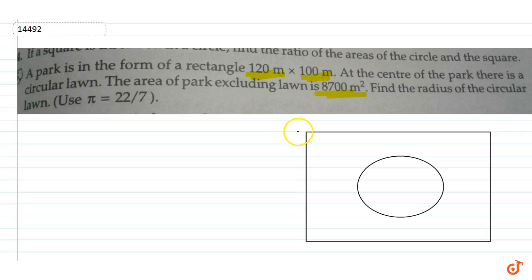So we have a rectangular park which is 120 meter by 100 meter. If I write area of park, the formula is length into breadth. The length value given is 120 and breadth is 100, so 120 into 100 equals 12,000 meter square. So the area of park is 12,000 meter square.